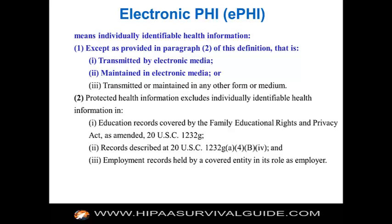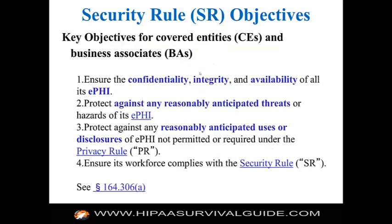The key objectives for covered entities and now business associates in complying with the security rule are: to ensure the confidentiality, integrity, and availability of all ePHI; to protect against any reasonably anticipated threats or hazards; to protect against reasonably anticipated uses or disclosures of ePHI not permitted or required under the privacy rule; and to ensure the workforce complies with the security rule. Those four key objectives should guide your security rule compliance initiative.